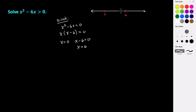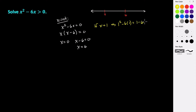Let's test a value between 0 and 6. If x equals 1 — you could pick any number, I just picked 1 for simplicity — substituting into our function gives us 1 squared minus 6 times 1, which is 1 minus 6, which equals negative 5. That's a negative value, so all of the values in between 0 and 6 are going to be negative.